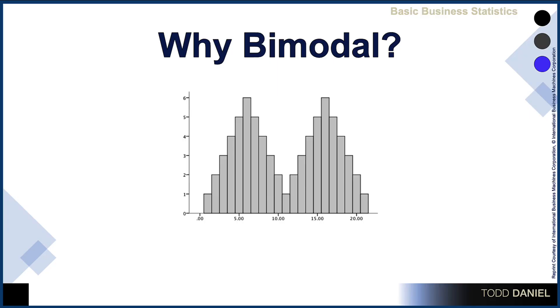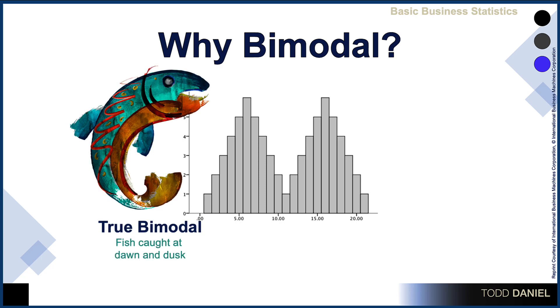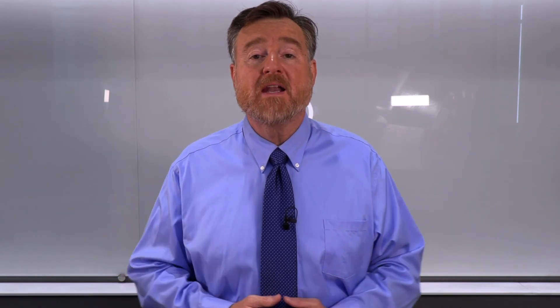The first reason why we might have a bimodal distribution is because there really are two most frequently occurring scores. I want you to imagine that we're getting away to the lake house and we are going to go fishing. When is the best time for us to fish? When are we going to catch the most fish?